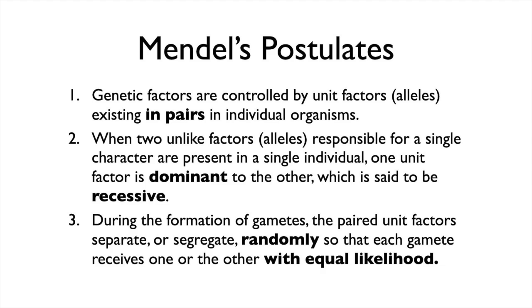We are going to discover next week that this is not always true. But for Mendelian genetics, we just assume dominant and recessive. The other important thing is postulate 3: it's all random, it's just chance which one goes where. The chances are all equal — it's always 50-50. That makes a lot of the calculations really, really easy. We'll see later it's not always 50-50, but you don't have to worry about that for Mendelian genetics.